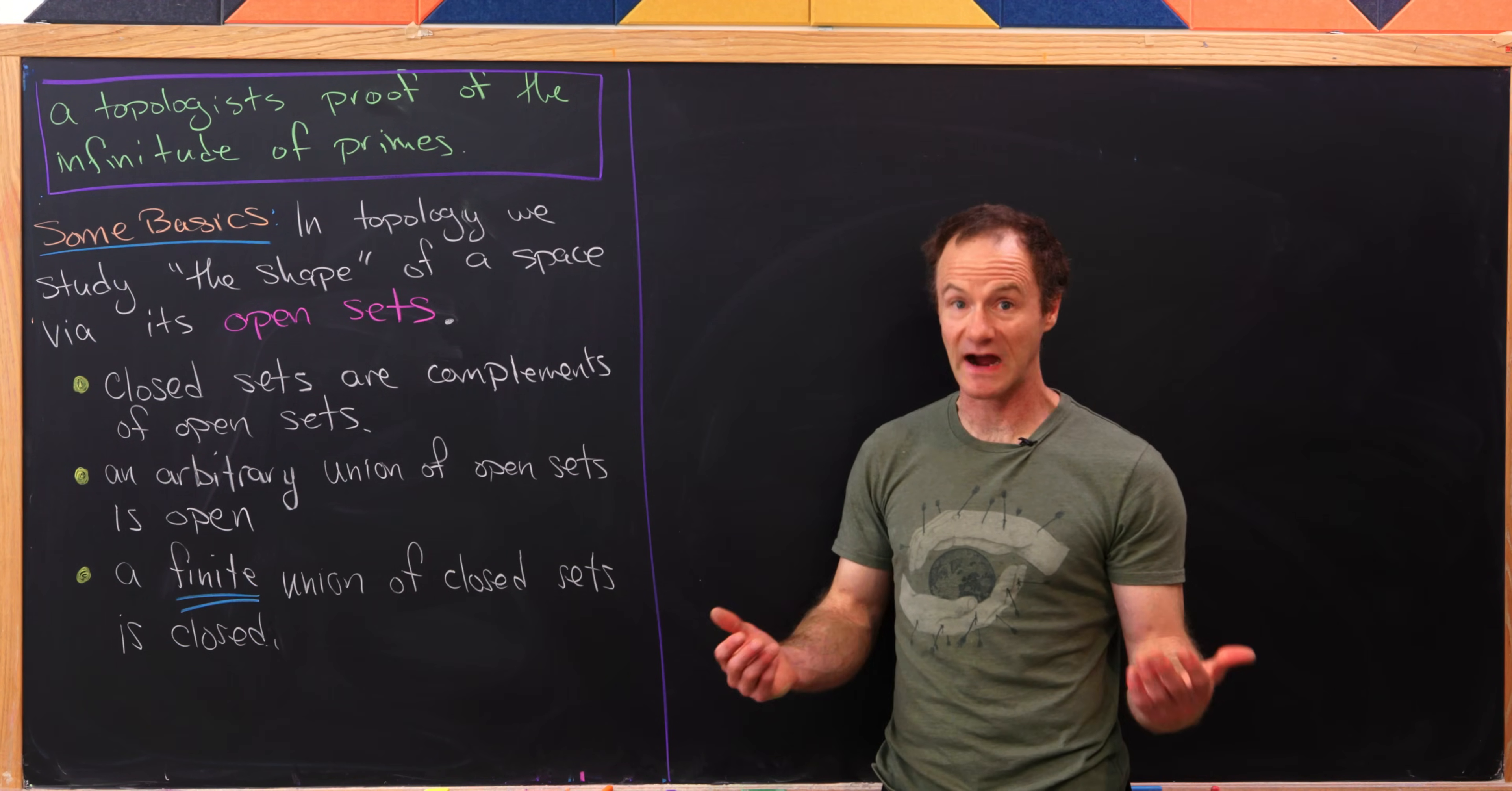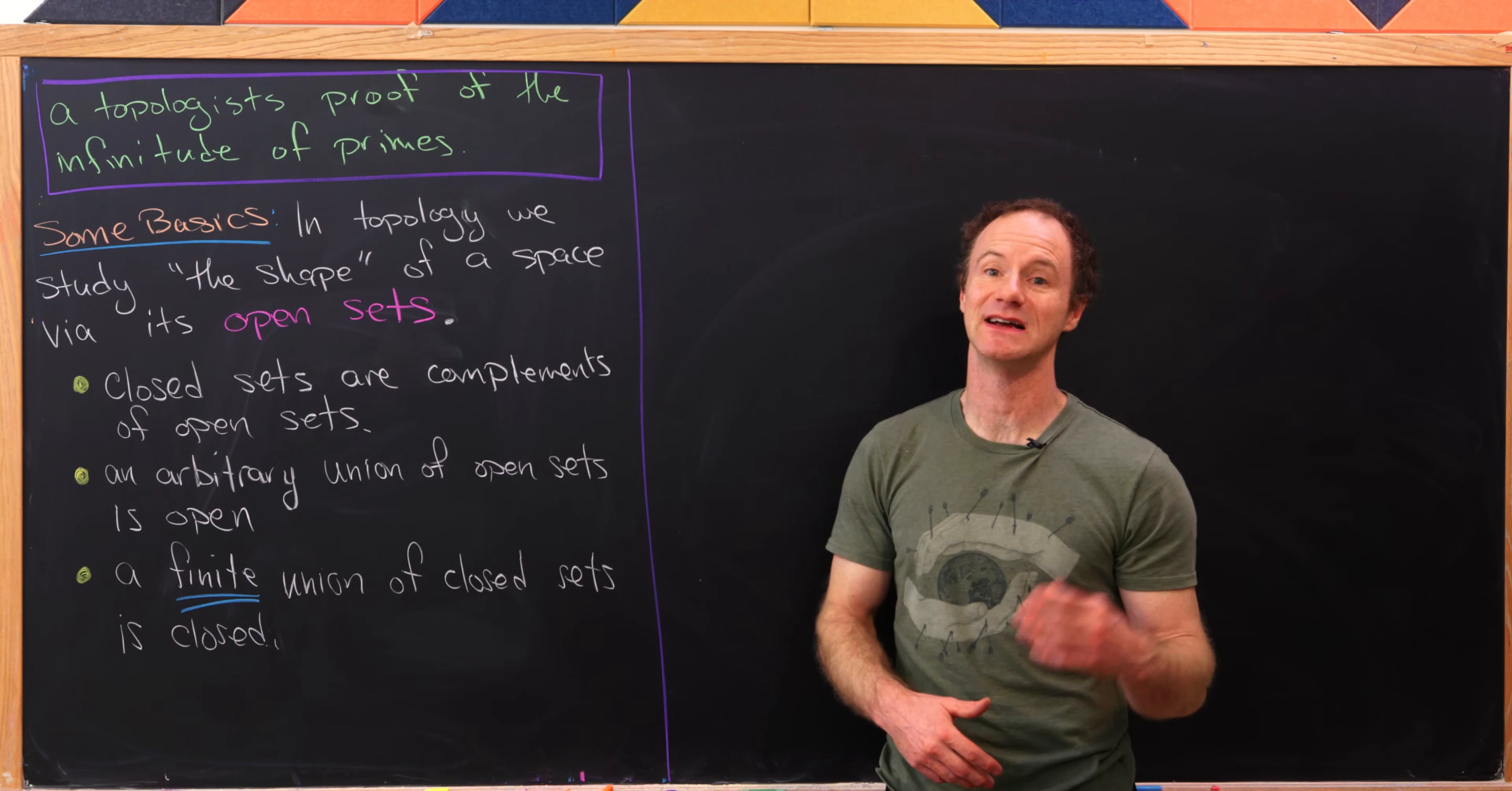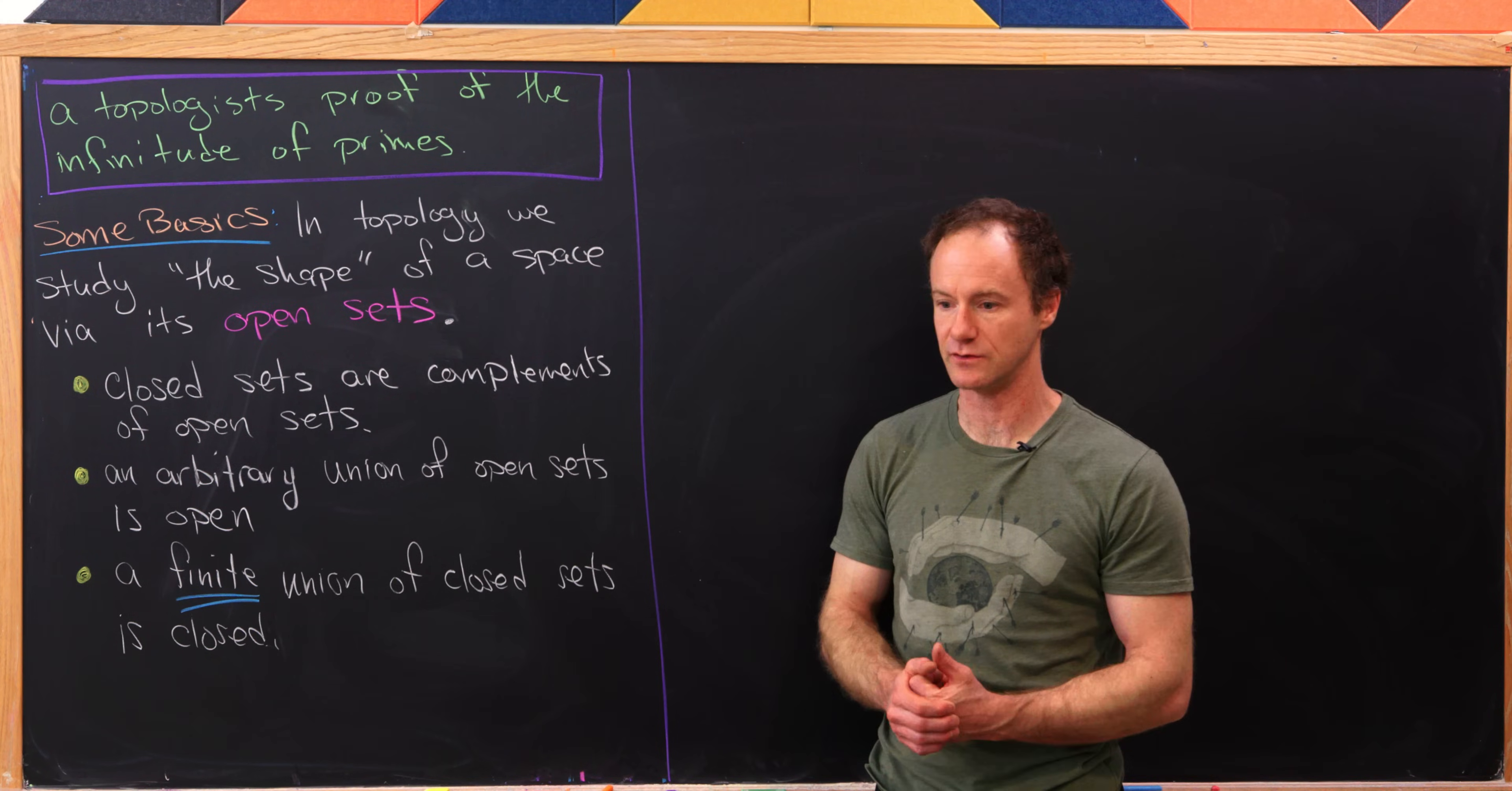And so that means I could take finitely many open sets, union them, and get an open set. And that union, that infinite union, I should say, could be a countable infinite union or an uncountable infinite union.